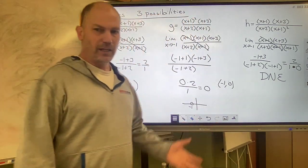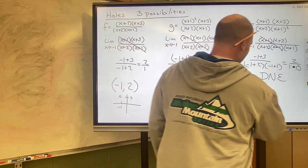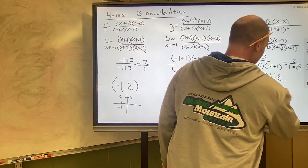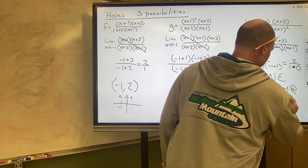So we look for the location of the hole. We found out the location of the hole does not exist. So what this means is it's a vertical asymptote at x equals negative 1.